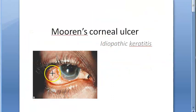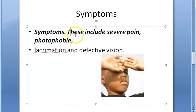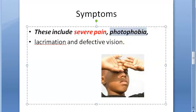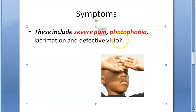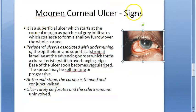The sclera — the white tissue behind the conjunctiva — can be involved in the virulent progressive type. Symptoms include severe pain, photophobia, lacrimation, and defective vision. Defective vision is expected because the cornea has an ulcer affecting its transparency.